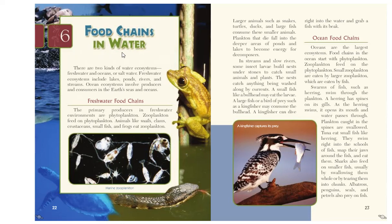Food chains in water. There are two kinds of water ecosystems: fresh water, like those found in lakes, rivers, and ponds, and oceans where we find salt water. Fresh water ecosystems include lakes, ponds, rivers, and streams. Ocean ecosystems involve producers and consumers in the earth's seas and oceans. The primary producers in fresh water environments are phytoplankton. Zooplankton feed on phytoplankton, and animals like snails, clams, crustaceans, small fish, and frogs eat the zooplankton. Larger animals such as snakes, turtles, ducks, and large fish consume these smaller animals. Plankton that die fall into the deeper areas of ponds and lakes to become energy for decomposers.